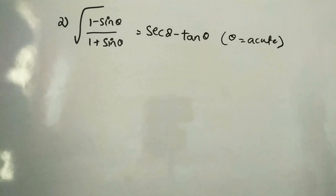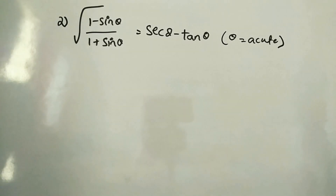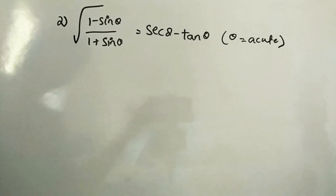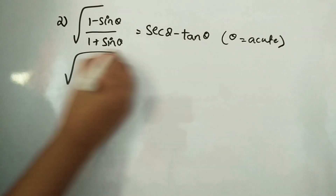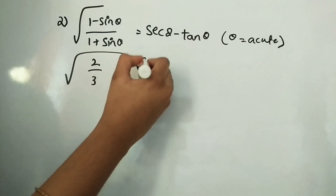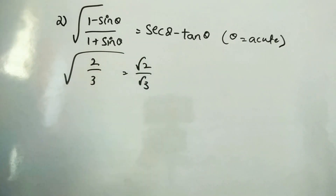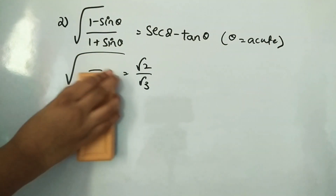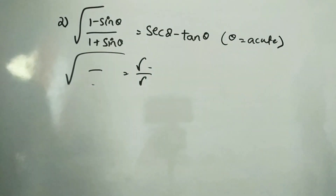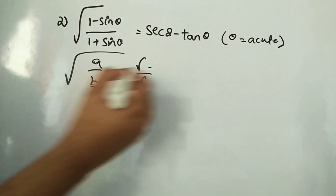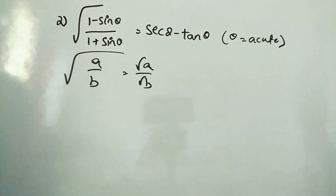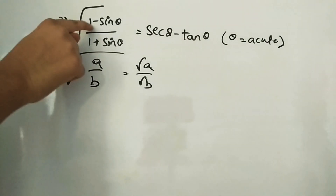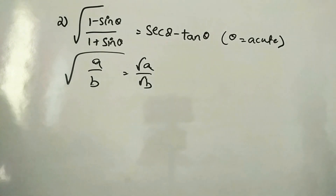There is a root here. We use the formula: √(a/b) = √a / √b. So this becomes √(1 − sin θ) divided by √(1 + sin θ). The denominator is irrational, so we rationalize by multiplying numerator and denominator by √(1 − sin θ).